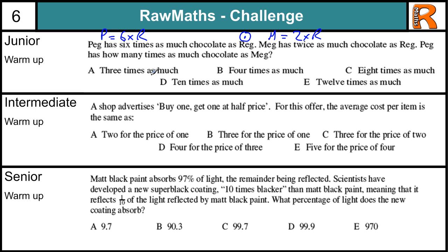then Peg has six times as much chocolate, so that's six. Meg has twice as much chocolate, so that's two. So how much more does Peg have than Meg? Well Peg is six and Meg is two, so that's three times as much. So that's Peg equals three times Meg. So that's A, three times as much.